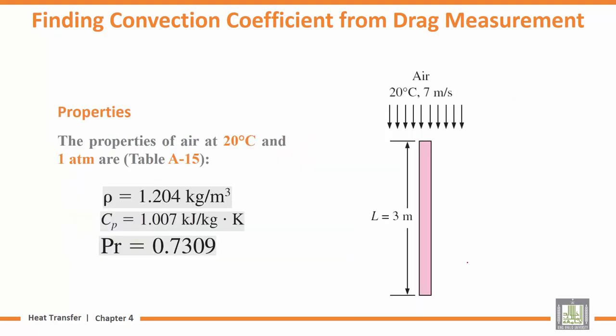First, we obtain the air properties at the temperature of 20 degrees Celsius and at 1 atmosphere. We assume 1 atmosphere because no pressure was given, so it's clear the plate is in outdoor air at 1 atmosphere. We look these up from Table A15 in the appendix to get rho, Cp, and Prandtl number.